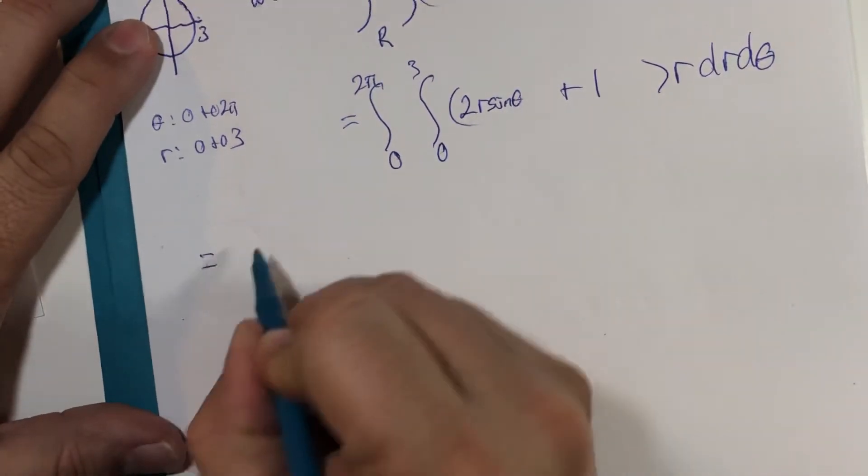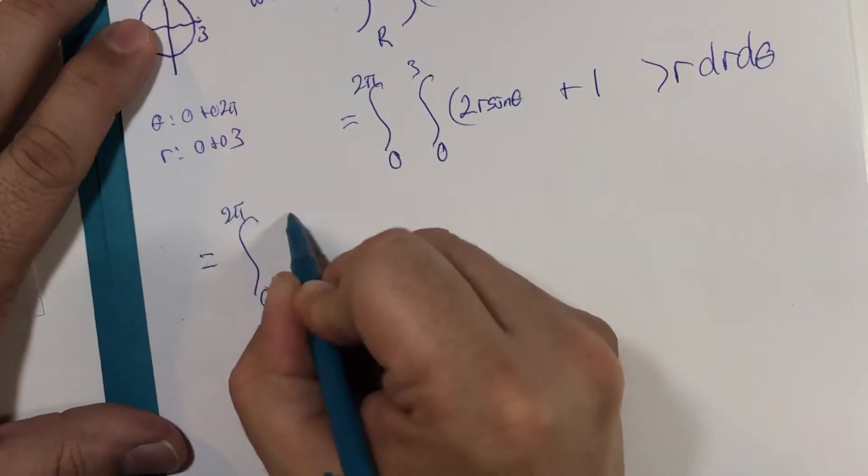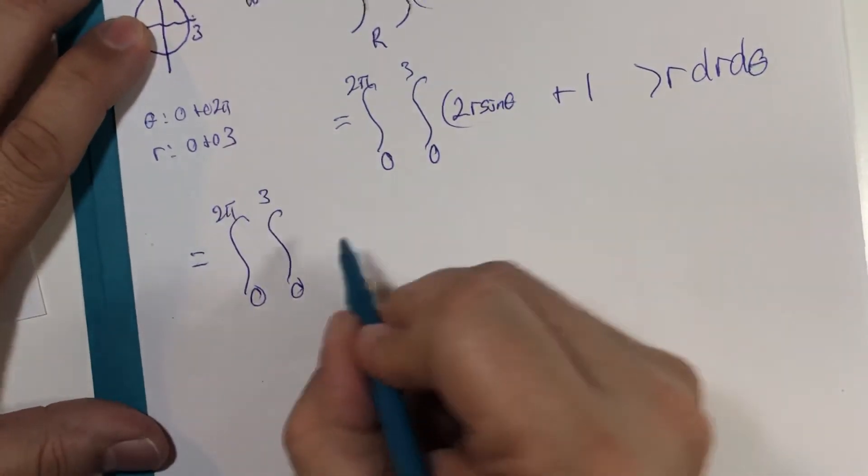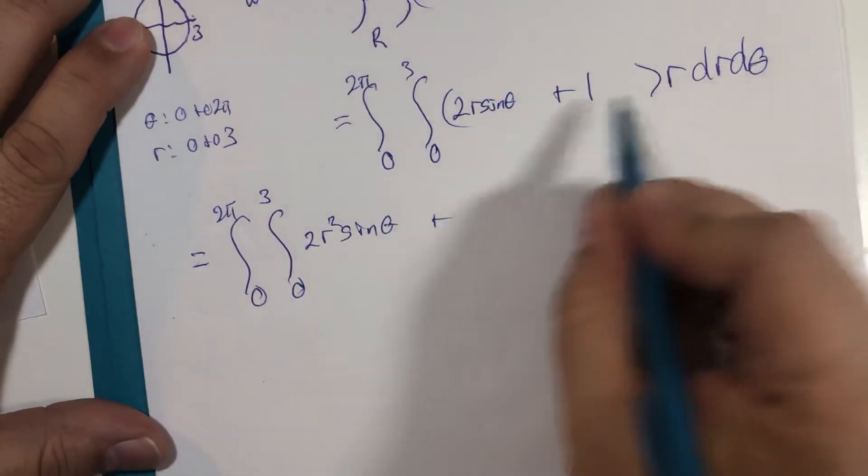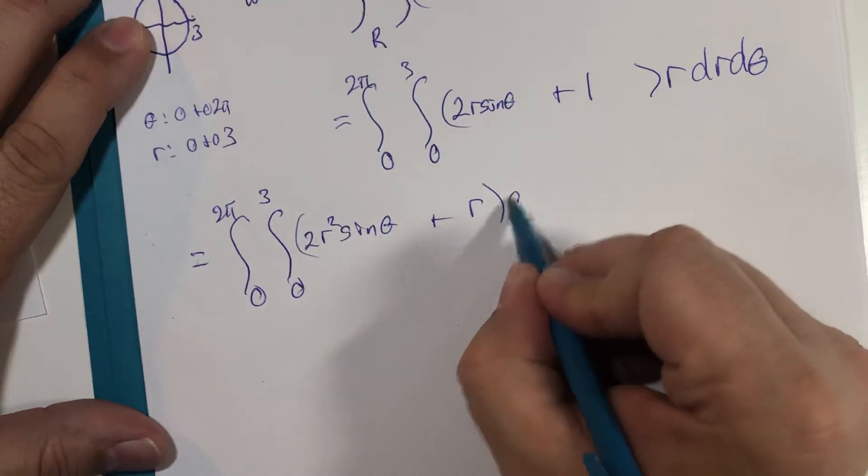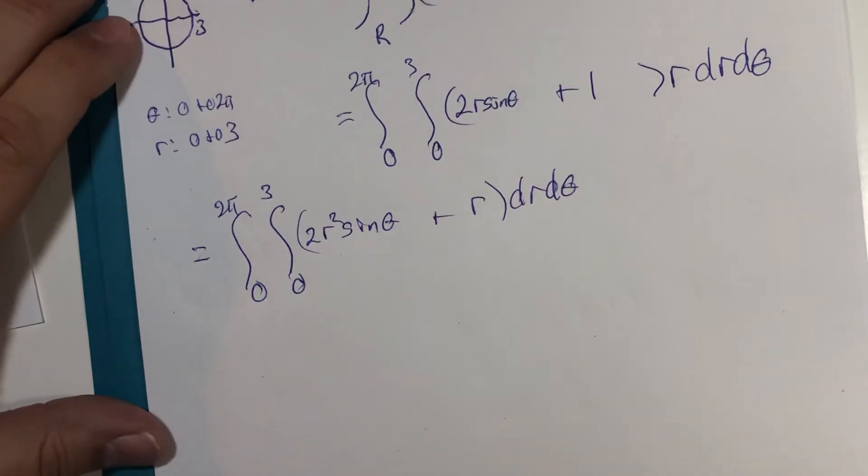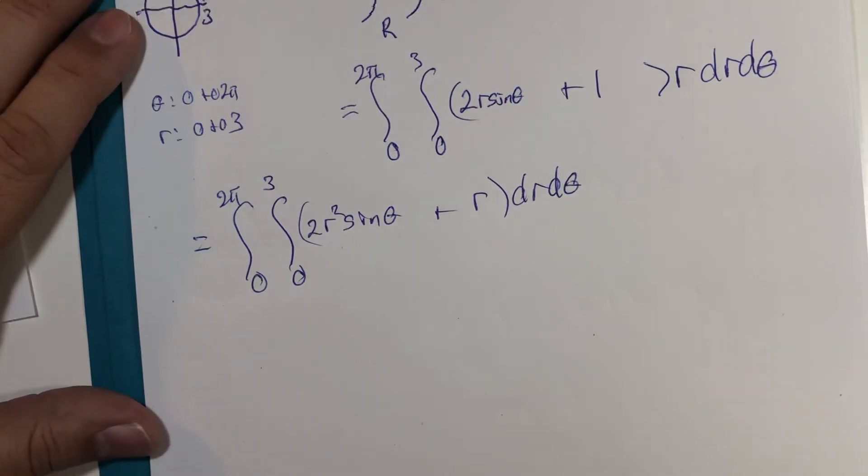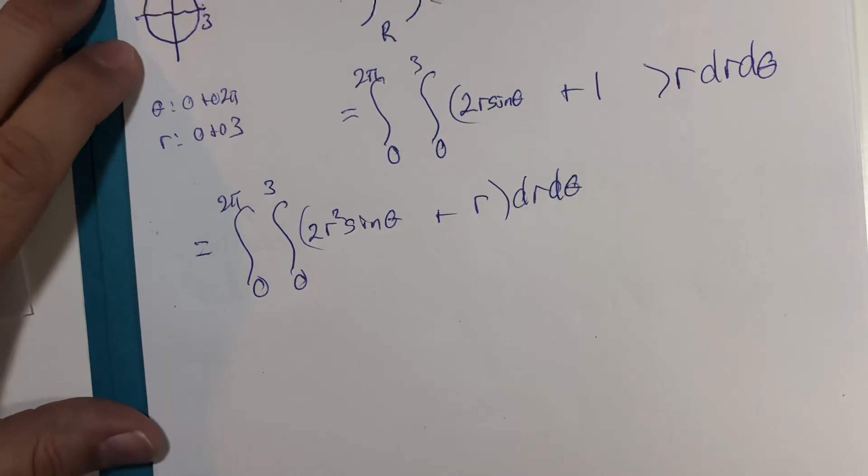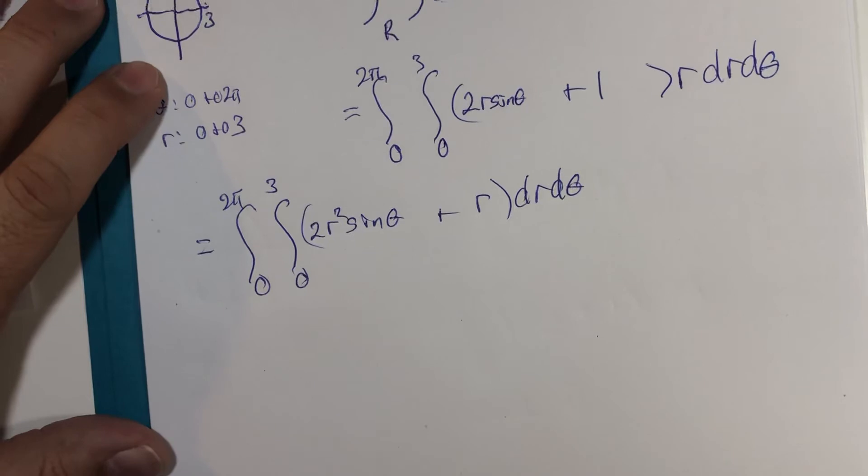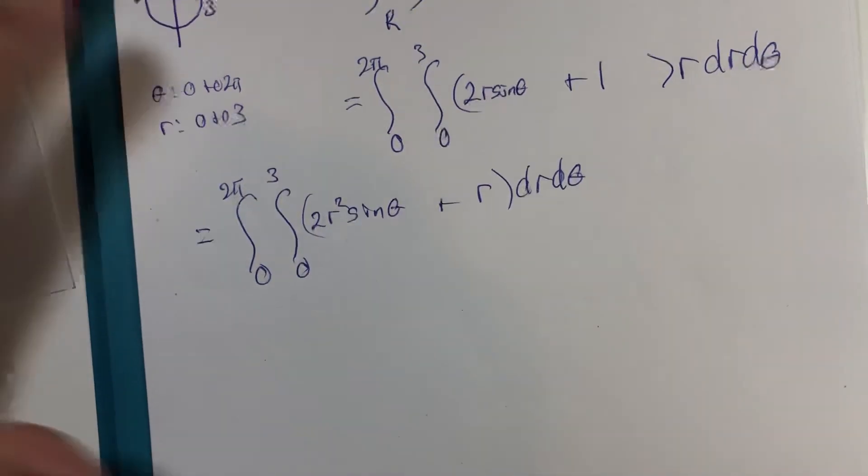Let me do one more step. 0 to 2 pi, 0 to 3. R times 2 r squared sine theta plus 1 times r is r. Now, you have a pause button. Pause. Work ahead. Then see if the rest of this video matches your work. If you're regularly working out integrations like we have in the last couple of units, I would definitely say work ahead of me and then watch the rest to see if it played out correctly. If you're rusty, well, here we go.